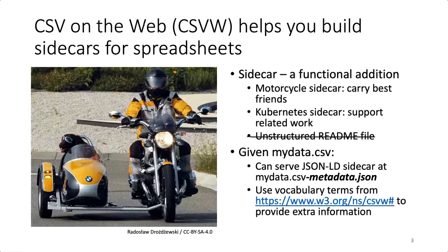But we're not here for JSON. We're here for spreadsheets. How can I power up my spreadsheet to be linked data? CSV on the web, or CSVW, is a standard that helps you build sidecars for spreadsheets.